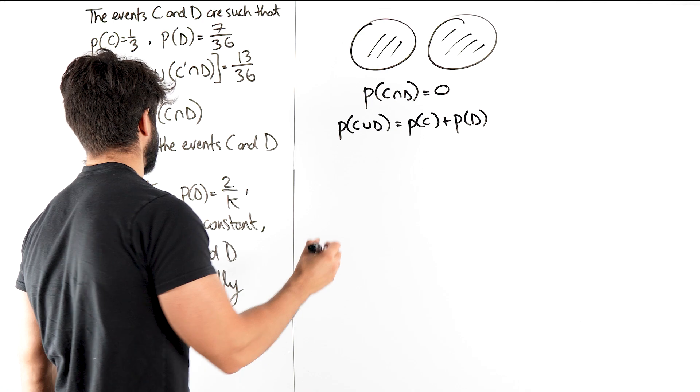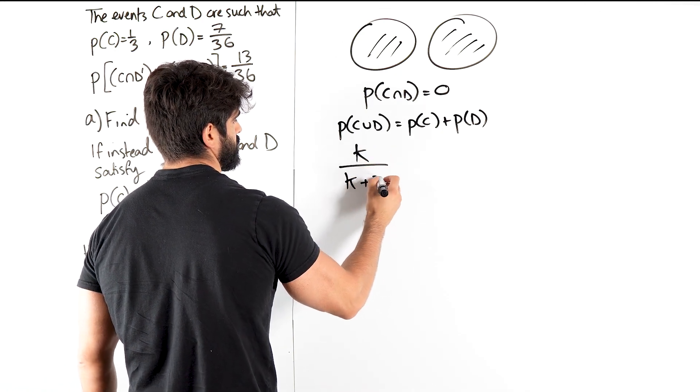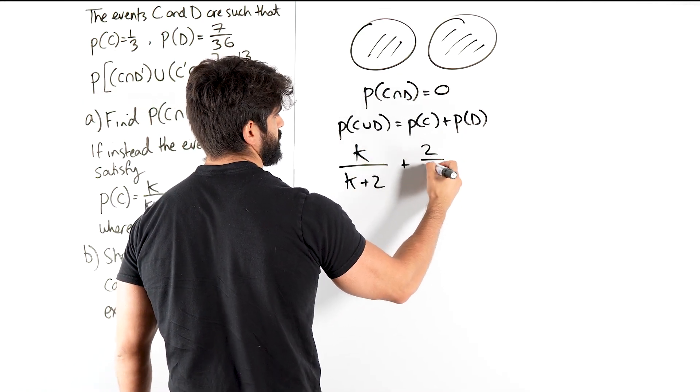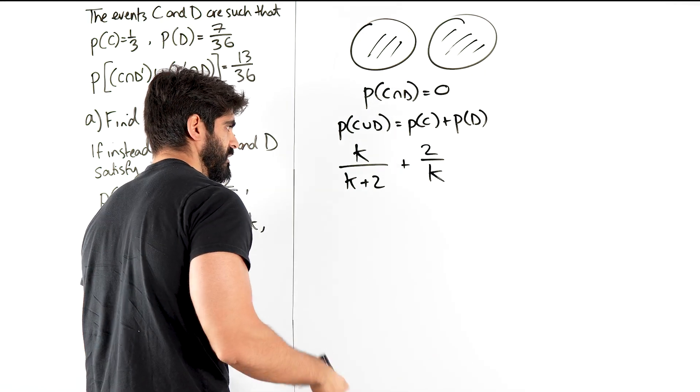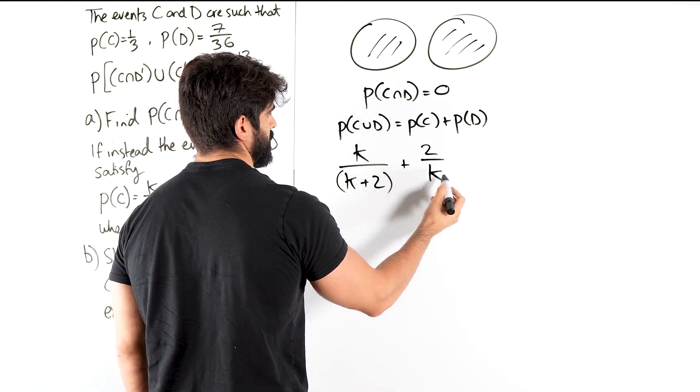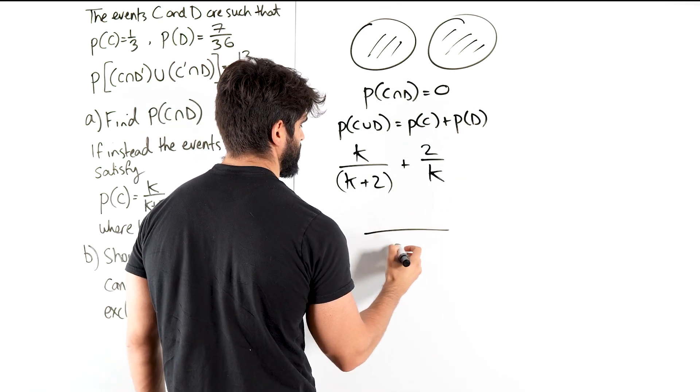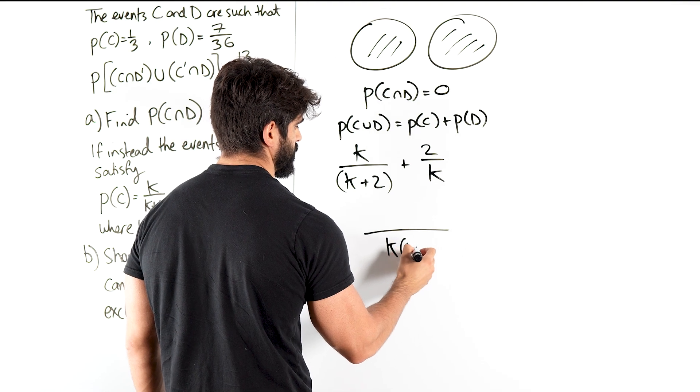So let's add them up. So we have K over K plus 2 plus 2 over K. I guess we bring it together. Let's do some common denominators in that.